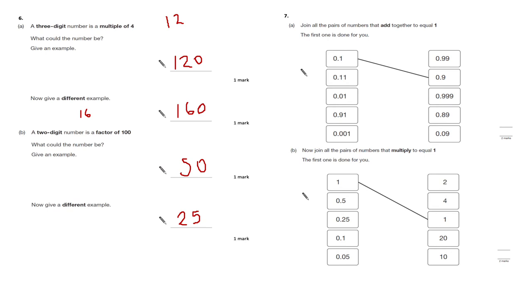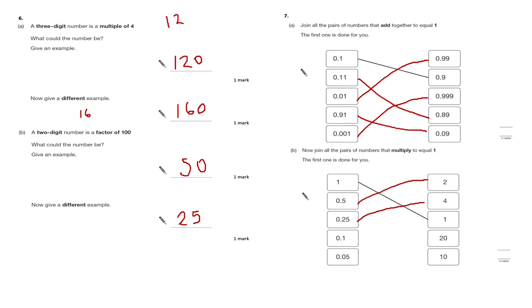Question 7: join all pairs of numbers that add together to equal 1. The pairs are: 0.11 + 0.89; 0.01 + 0.99; 0.91 + 0.09. Part b: join all pairs that multiply to equal 1: 0.5 × 2 = 1; 0.25 × 4 = 1; 0.1 × 10 = 1; 0.05 × 20 = 1.